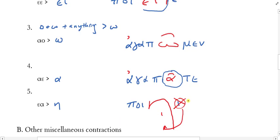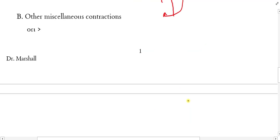Those are the big five. You are going to see these contractions over and over again, so it will be very good to memorize them and really commit them to heart.